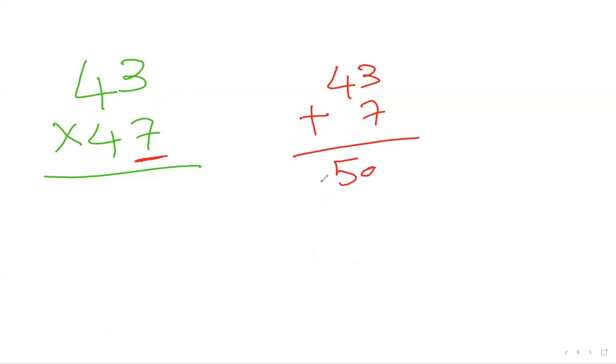Once you get that, you're going to multiply that with your common number, which is 4 in this case. So 50 times 4, which is 200.